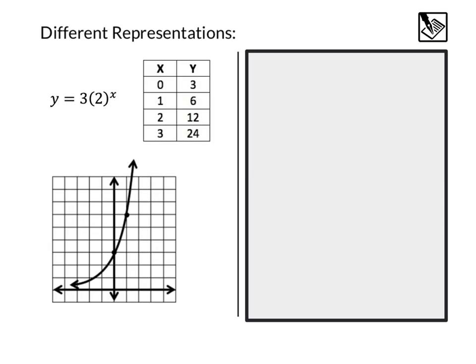Just like any other type of mathematical function, we can represent these in different ways. We have our equation — for example, y equals 3 times 2 to the x power. We can make a table. If our x values are 0, 1, 2, and 3: 3 times 2 to the 0 power is 3, 3 times 2 to the 1st power is 6, and so on.